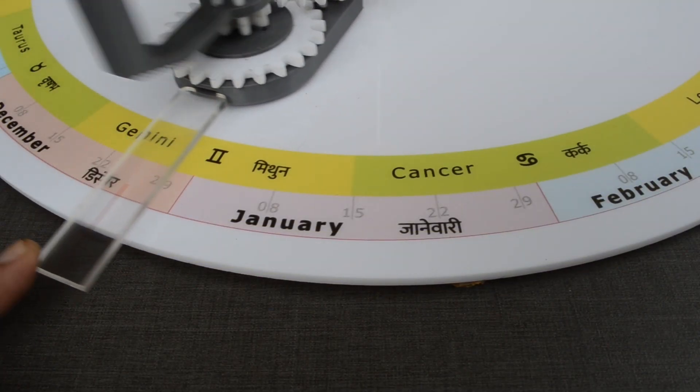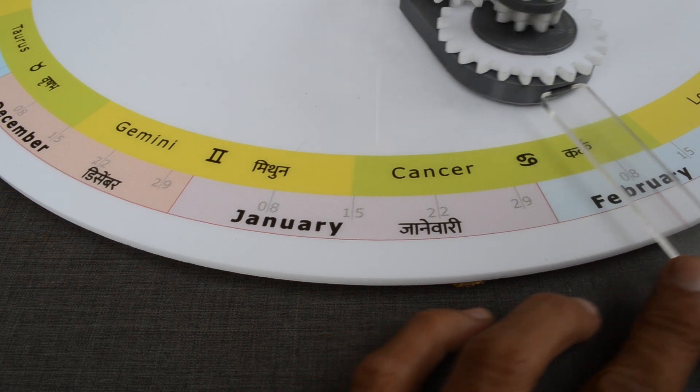Marking on the handle indicates the position of Earth with respect to the Sun as per the English calendar.